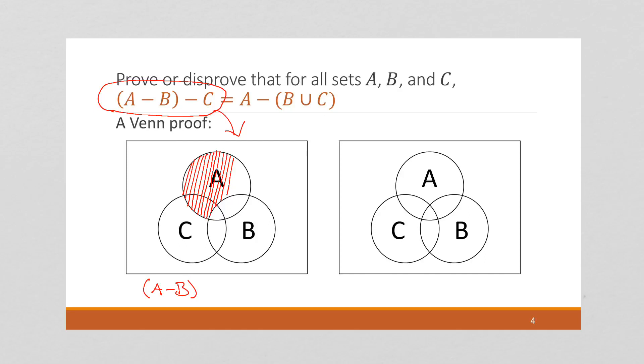You want to be neat enough about shading these in that there's no confusion. Right? If you kind of went like that, well, it's not totally clear. Is this section right here meant to be covered? Or was that an accident? It's unclear. So you do want to be as clear as possible when illustrating these Venn diagrams.